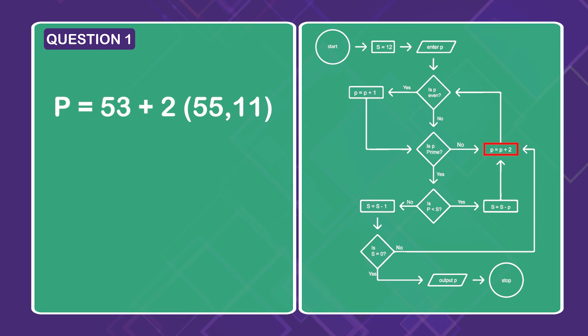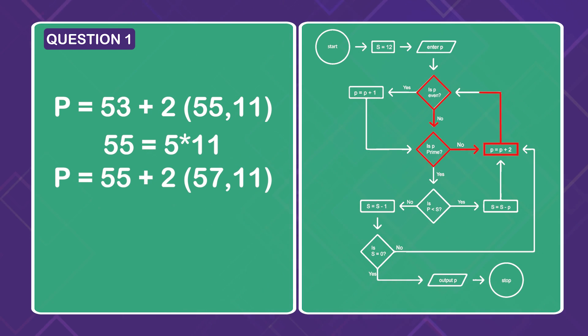Add 2 to p to get (55, 11). Is p even? No. Is p prime? No. 55 equals 5 times 11. Around the upper loop. Add 2 to p, (57, 11). Is p even? No. Is p prime? No. 57 equals 3 times 19. Around the upper loop. Add 2 to p, (59, 11).